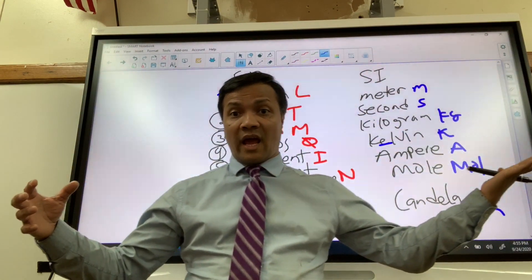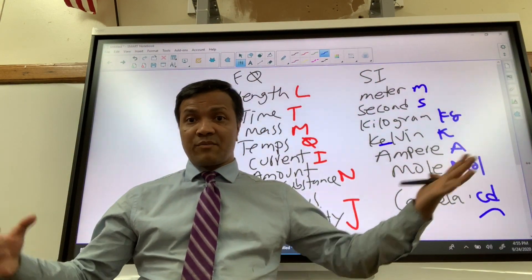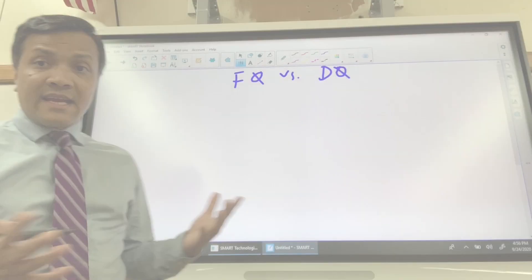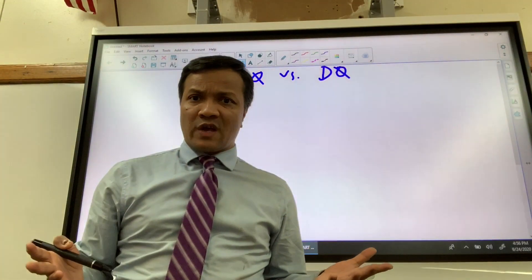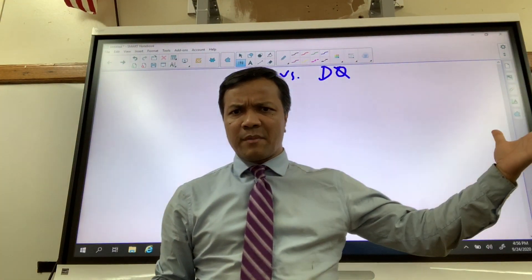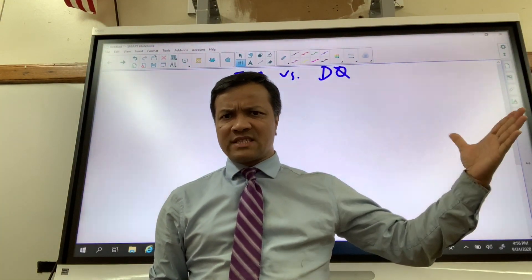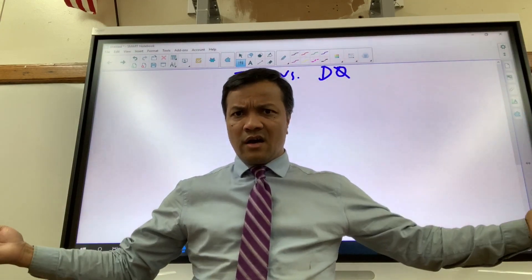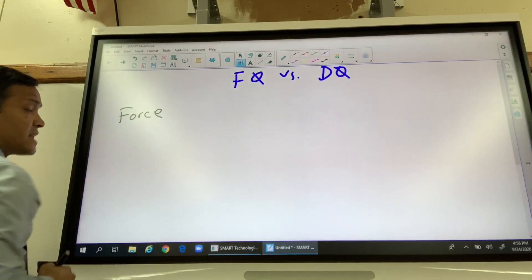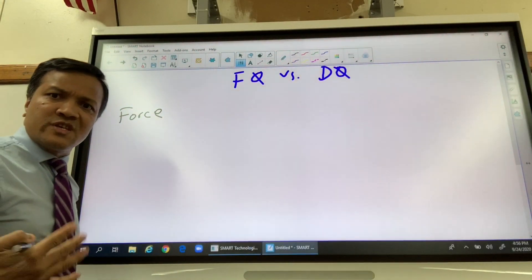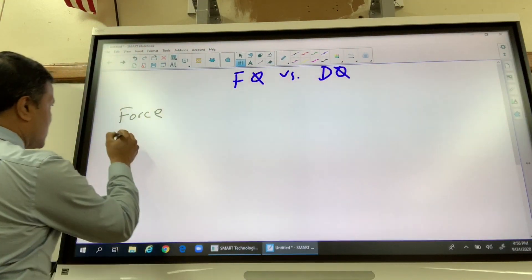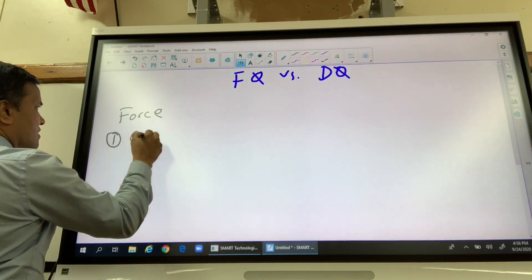Now I'm going to show you the difference between fundamental quantity and derived quantity. It's very important. Let's get started with force, because force is the most famous example for physics. There are four fundamental forces in the universe.